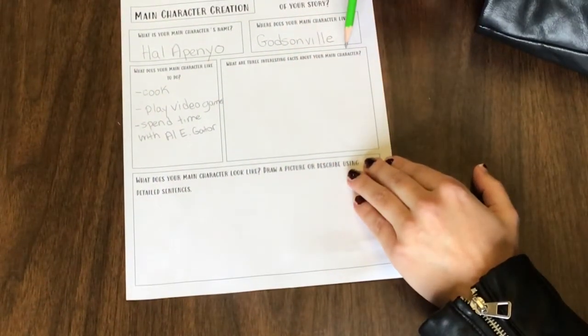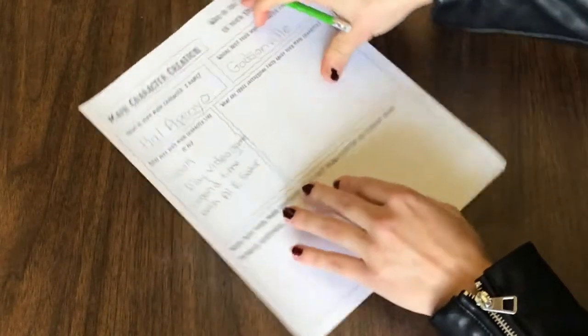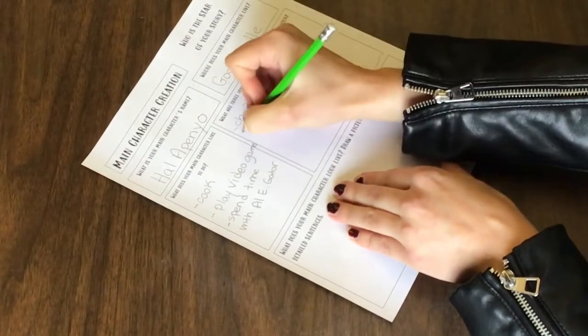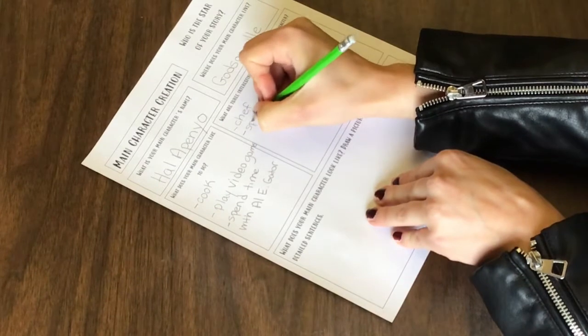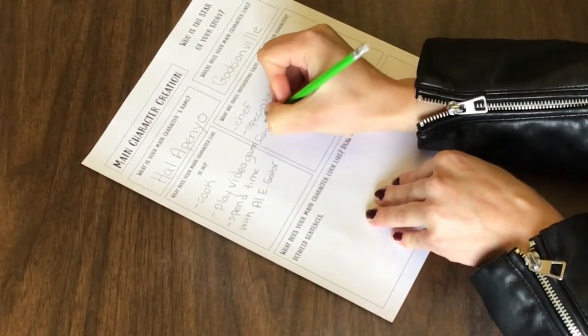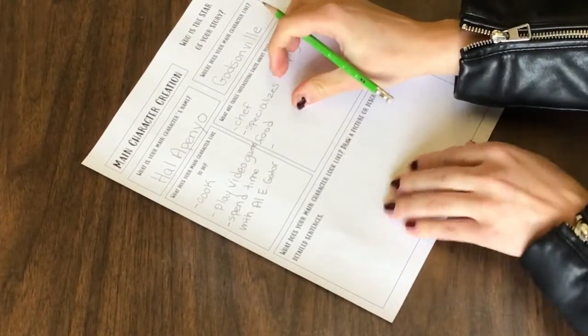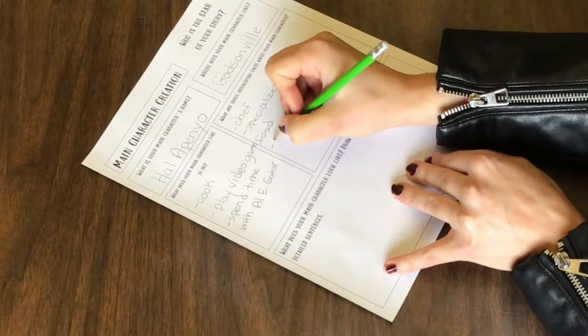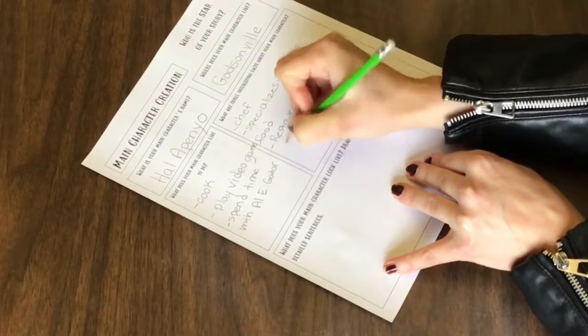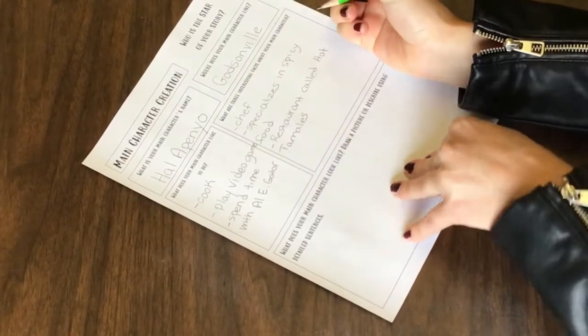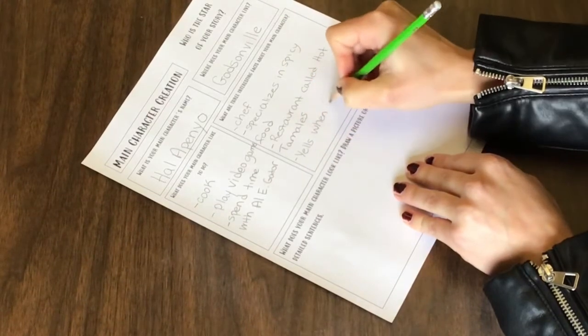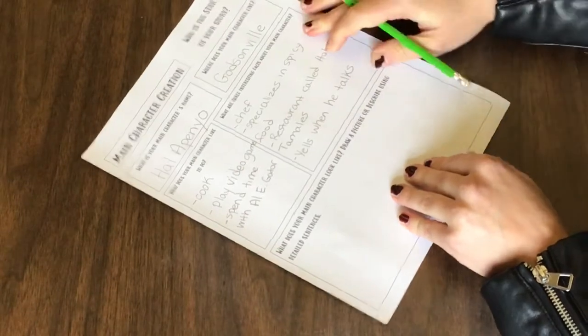Now I'm going to look at what are three interesting facts about my main character. So I said that my main character likes to cook, and I said that because my main character is a chef who specializes in cooking spicy food. And the restaurant where he creates this spicy food is a restaurant called Hot Tamales. And something else that's interesting about my character is that he yells when he talks.